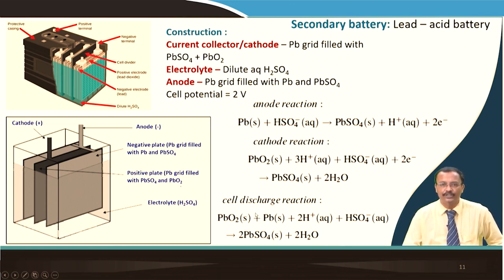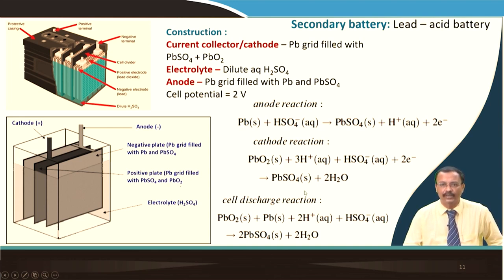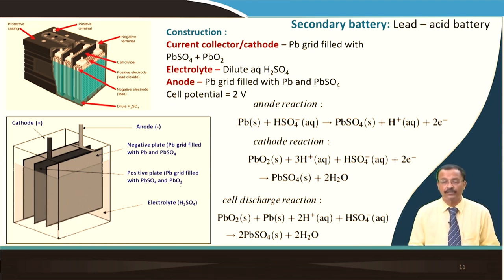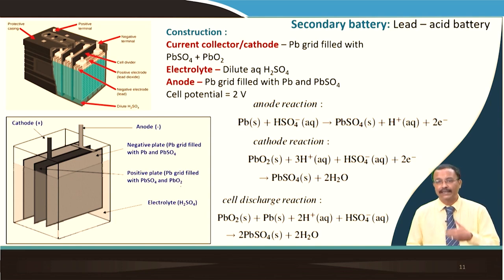The cell potential is about 2 V. The discharge reaction can be worked out by adding the anode and cathode reactions together to get the overall cell reaction. Each cell gives 2 V, so if you want a 12 V battery, you need to connect six such cells in series. If you want to increase the capacity of the battery, you connect cells in parallel.